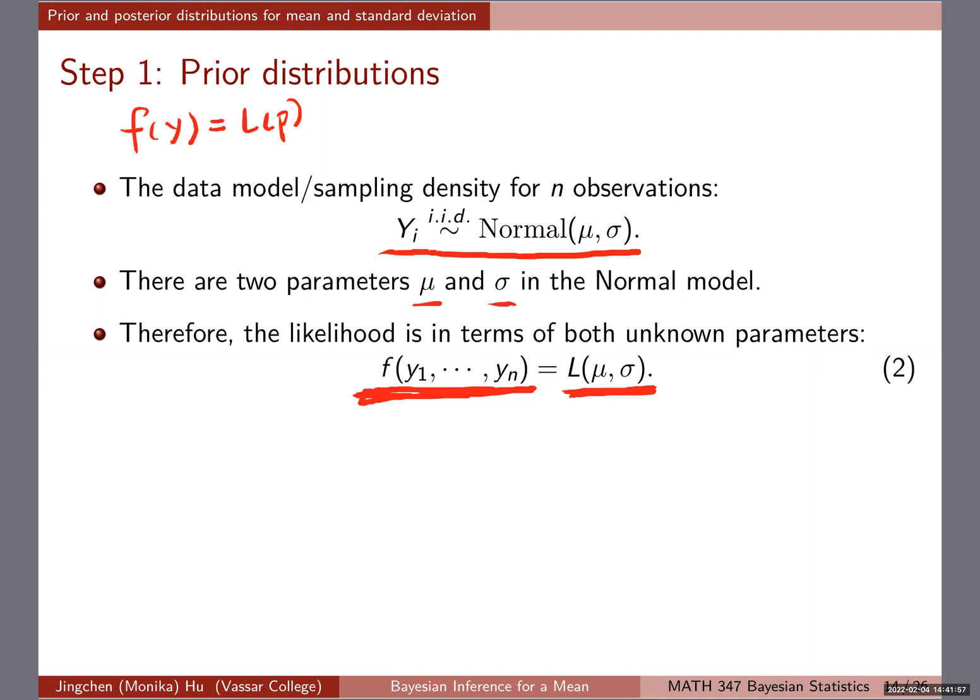To refresh our memory, in the beta-binomial case we did before, we have our data which is y, and that's the sampling model itself. We rewrite it in terms of p and call it a likelihood function. We're doing something very similar here in equation 2. We're writing out the joint density.